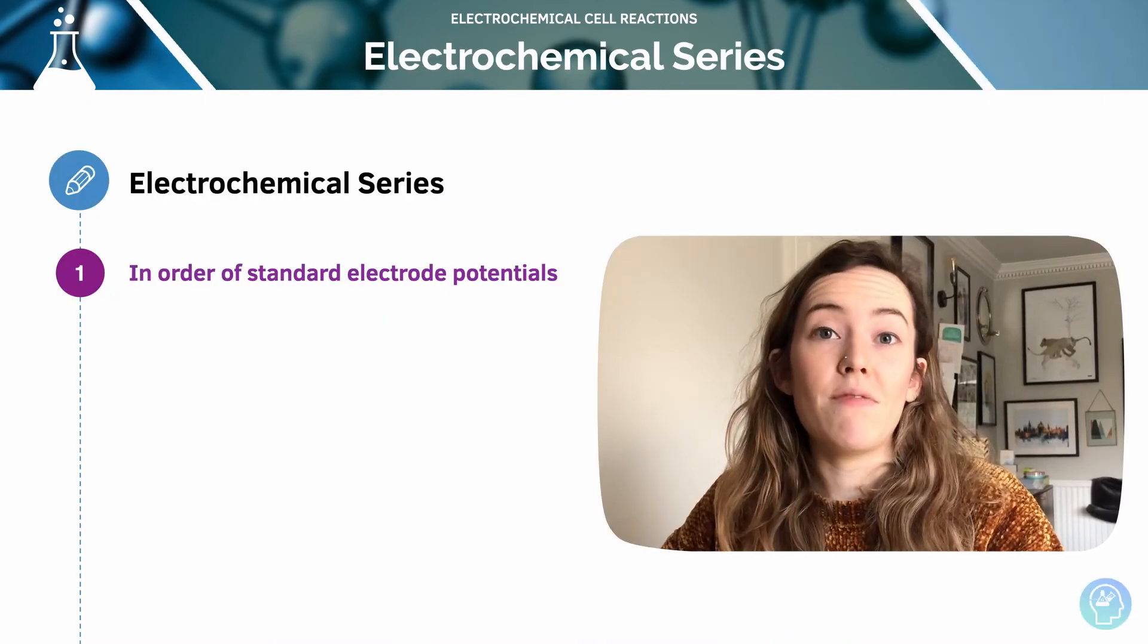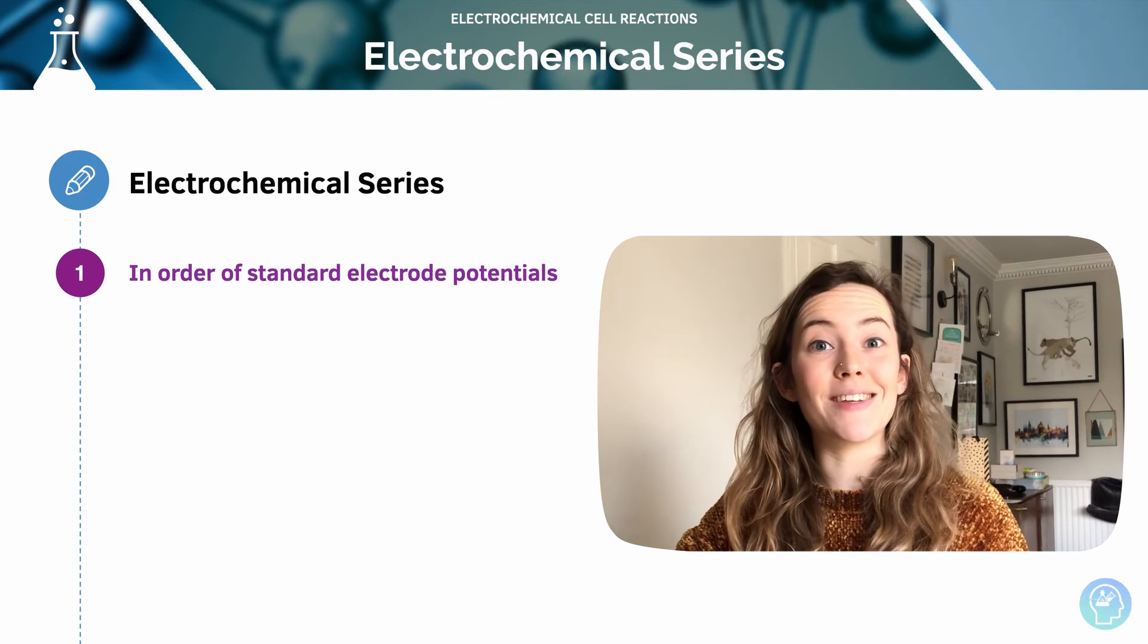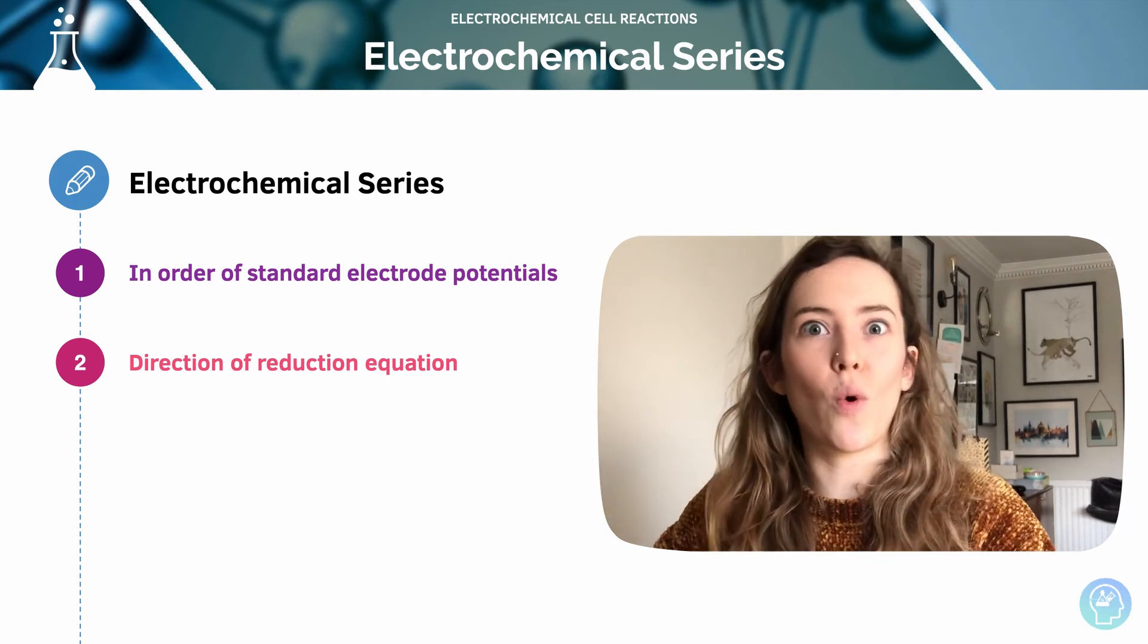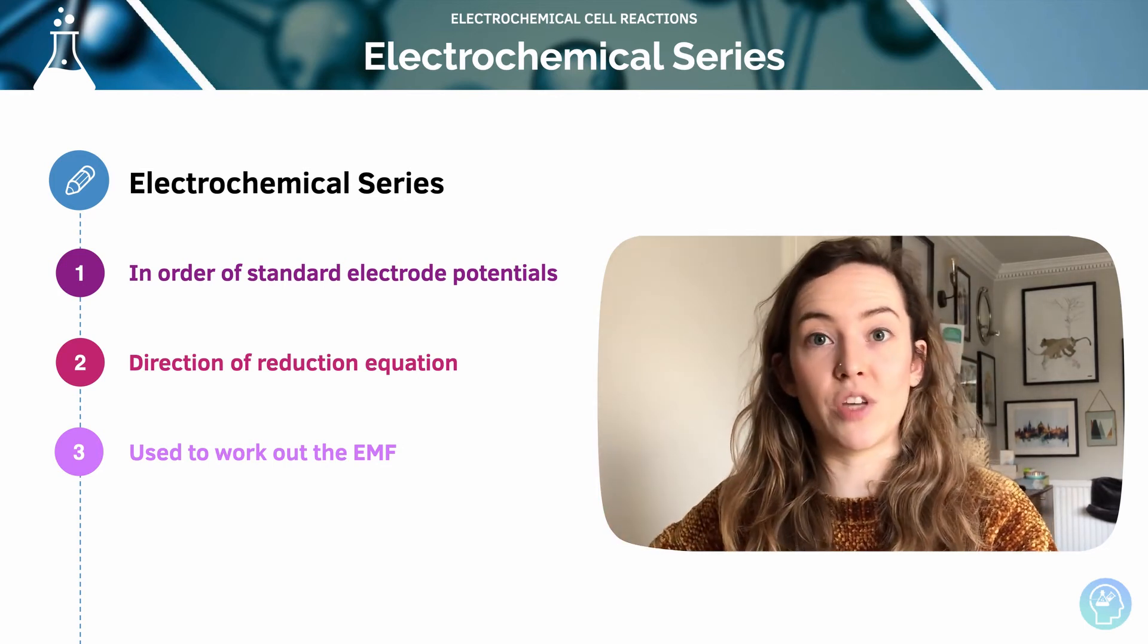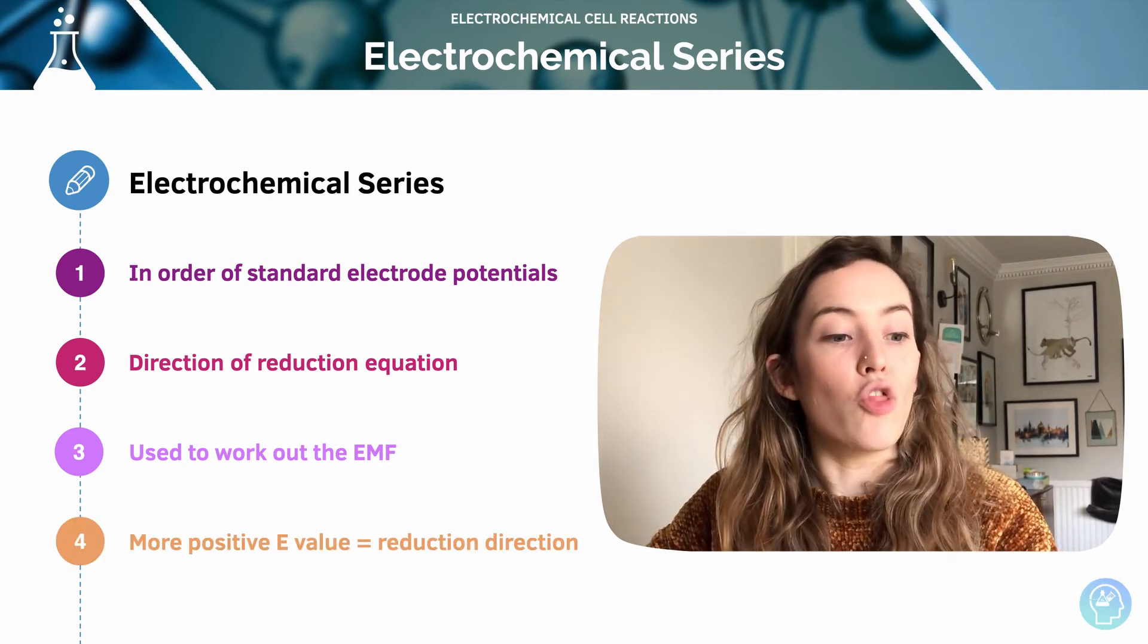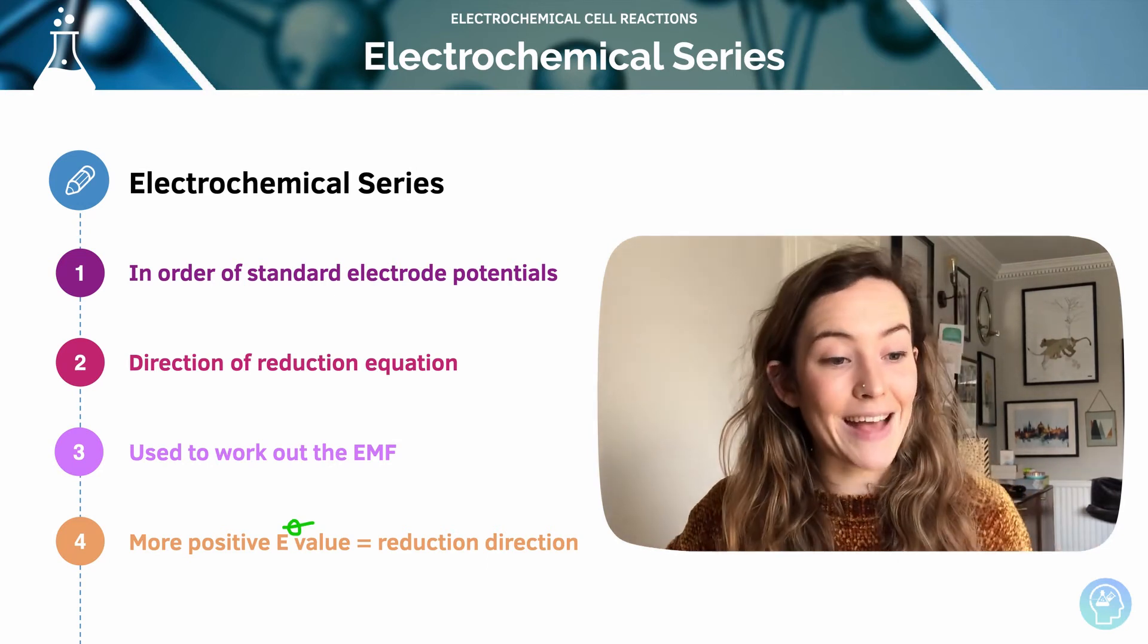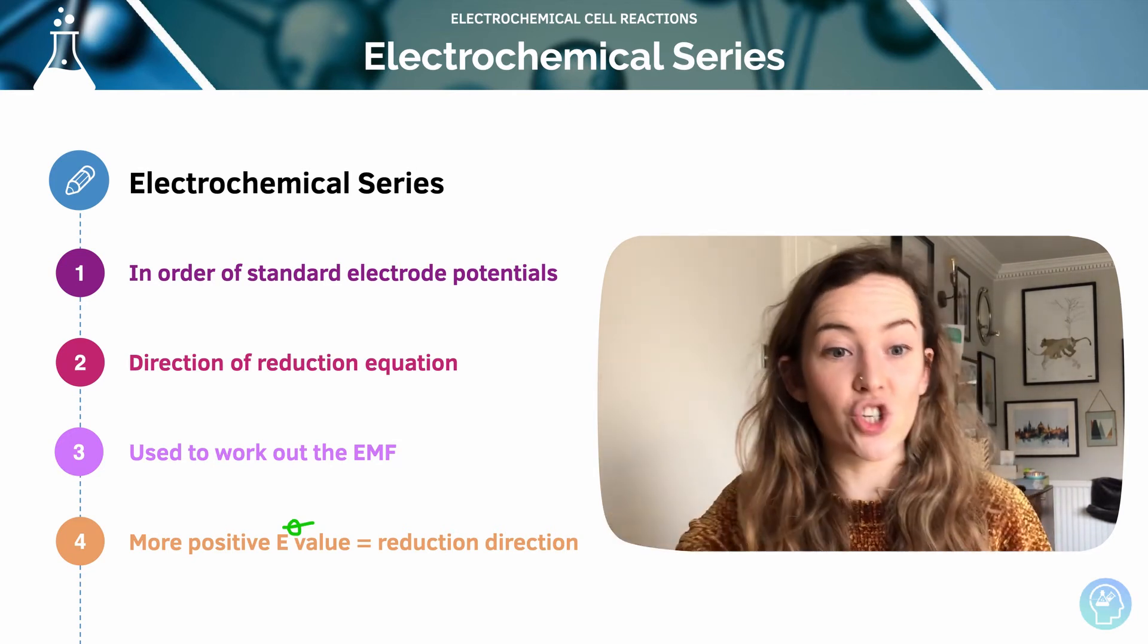What you'll often be provided with in an exam is an electrochemical series. So it's a series of elements arranged in order of their standard electrode potentials. And they're always going to be written by default as reduction in the direction of the reduction equation. And we can use those standard electrode potentials that will be listed in the electrochemical series to work out the EMF or the cell potential. The more positive the standard electrode potential value, that is going to be the reduction direction and vice versa. The less positive electrodes at standard electrode potentials, they're going to proceed in the reverse direction. So in the oxidation direction.